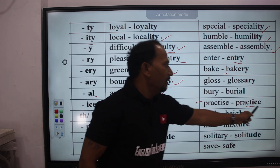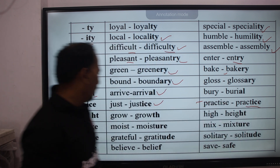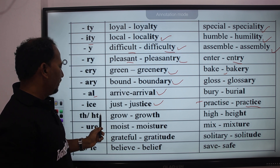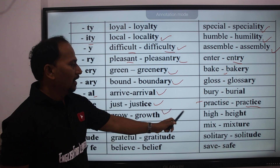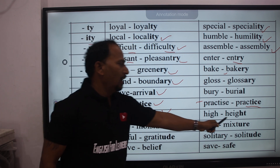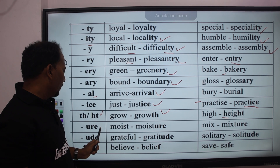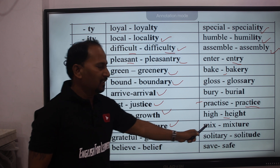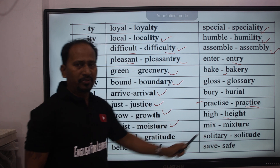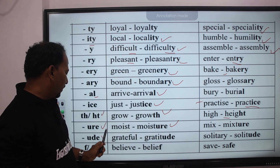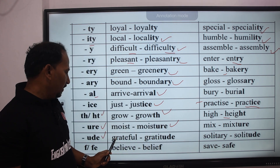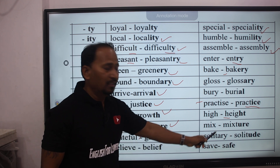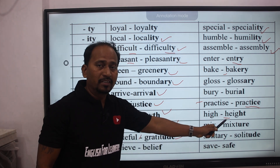Suffix -ion: discuss → discussion, expand → expansion. Suffix -ance: ignore → ignorance, assure → assurance. Suffix -ence: exist → existence, depend → dependence, dependency. Suffix -cy: vacant → vacancy, private → privacy. Suffix -ty/-ity: loyal → loyalty, special → speciality, local → locality, humble → humility. Suffix -y: difficult → difficulty, assemble → assembly. Suffix -ry/-ery: pleasant → pleasantry, green → greenery, bake → bakery. Suffix -ary: bound → boundary, gloss → glossary. Suffix -al: arrive → arrival, bury → burial. Suffix -ice: just → justice, practice. Suffix -th: grow → growth, high → height. Suffix -ure: moist → moisture, mix → mixture. Suffix -ude: grateful → gratitude, solitary → solitude.